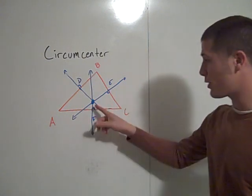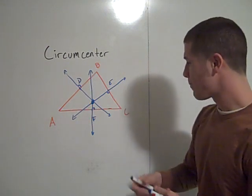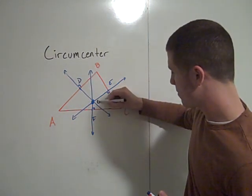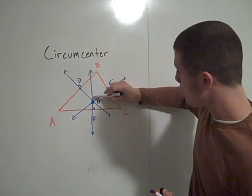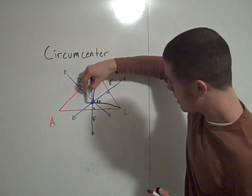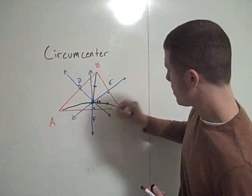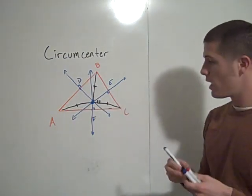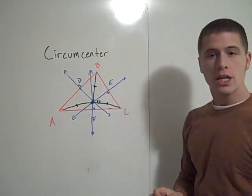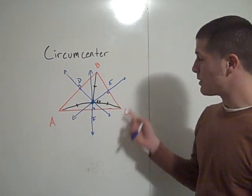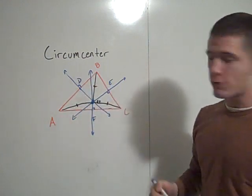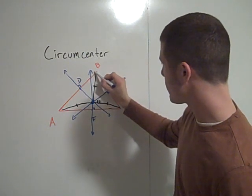The circumcenter theorem says that the circumcenter is equidistant from the vertices of the triangle. So if I call this point G — if G is the circumcenter — then GB, GC, and GA are all congruent to one another. If you consider GC, GB, and GA each to be radii of a circle, then the circumcenter is the center of the circle that circumscribes the triangle, going all the way around and containing the vertices.